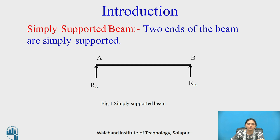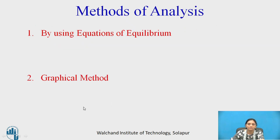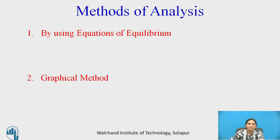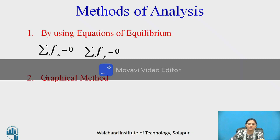A simply supported beam means the two ends of the beam are simply supported, as shown here in the figure. There are two methods used for the analysis: one is by using equations of equilibrium, called the analytical method, and the second is the graphical method. For beam analysis, three equations of equilibrium are used: summation of horizontal forces in the x-direction equals 0, summation of vertical forces in the y-direction equals 0, and summation of moments equals 0.